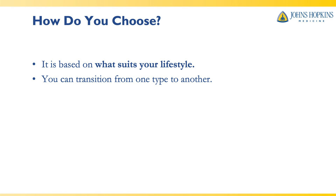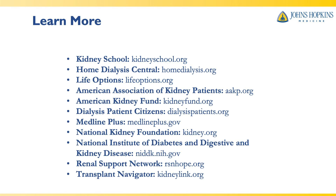How do you choose which type of dialysis is best for you? You pick the one that suits your lifestyle. You can transition from one type of dialysis to the other. Neither type is better than the other — both types have good outcomes. It's more important to find the one you're more comfortable with that fits your lifestyle, because then you'll have better results. If you want to learn more about treatment options for end-stage kidney disease, please refer to the resources provided.